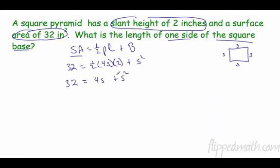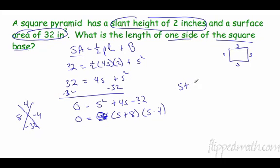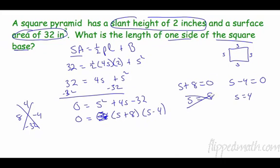Simplifying: one-half of 4 is 2, times 2 is 4, so 32 = 4s + s². Moving everything to one side: 0 = s² + 4s − 32. Factoring: (s + 8)(s − 4) = 0, giving s = −8 or s = 4. Since a side length cannot be negative, the answer is s = 4.